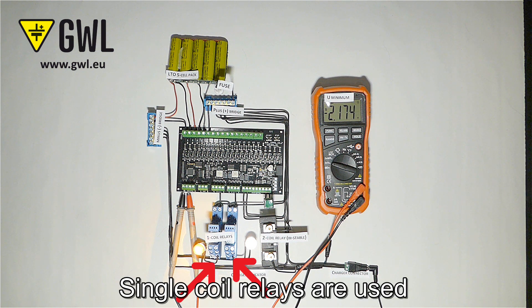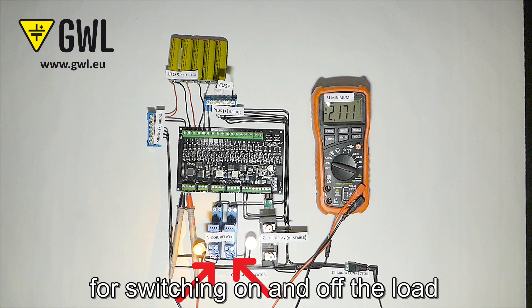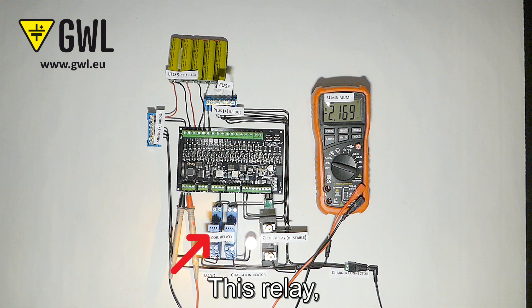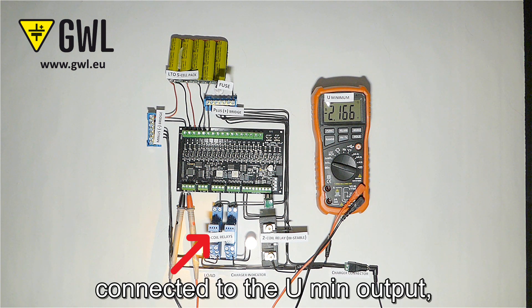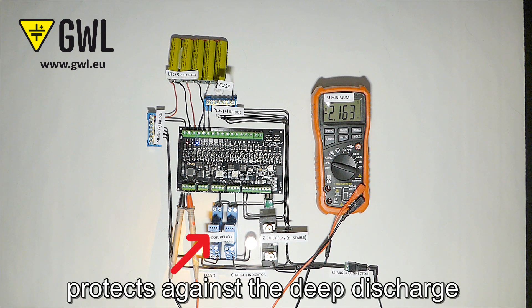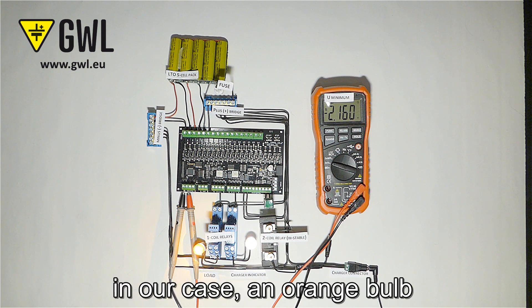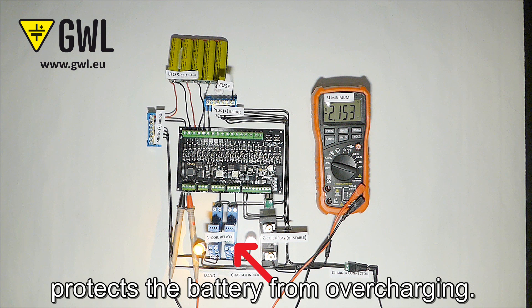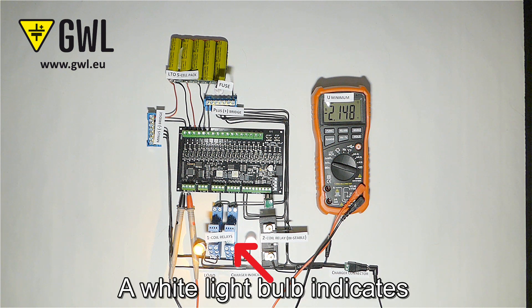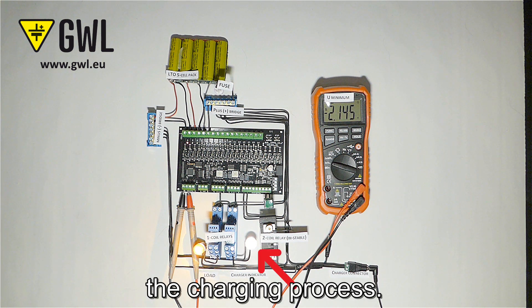Single coil relays are used for switching on and off the load and the charger. This relay connected to the U-min output protects against the deep discharge of the battery load. In our case an orange bulb. The right relay protects the battery from overcharging. A white light bulb indicates the charging process.